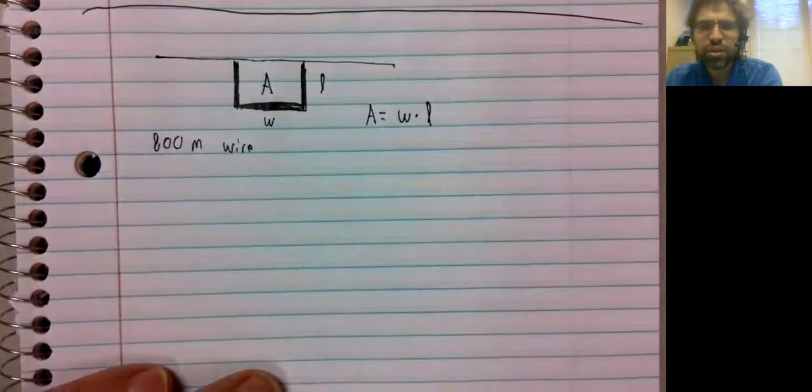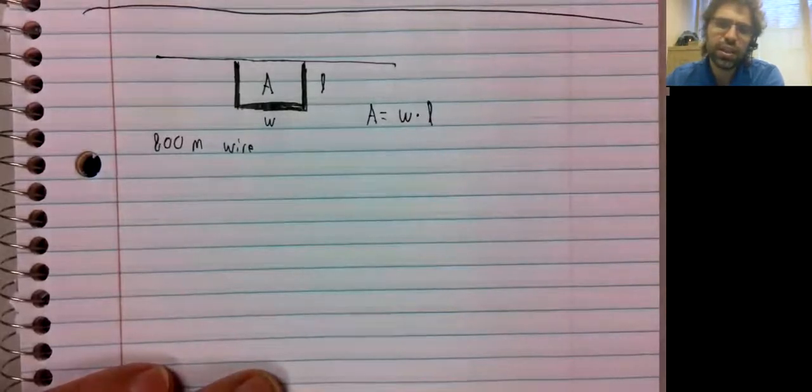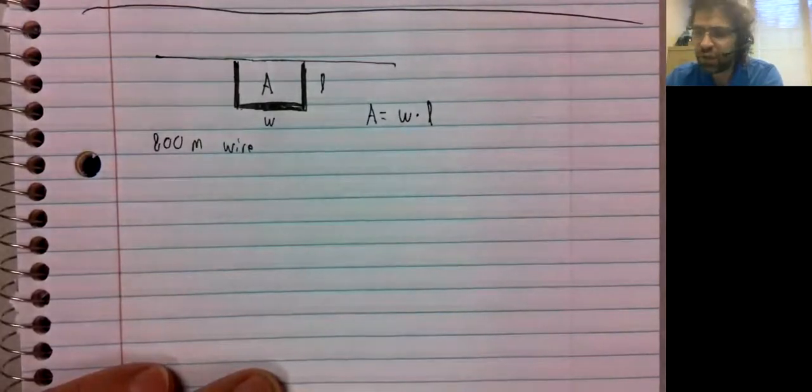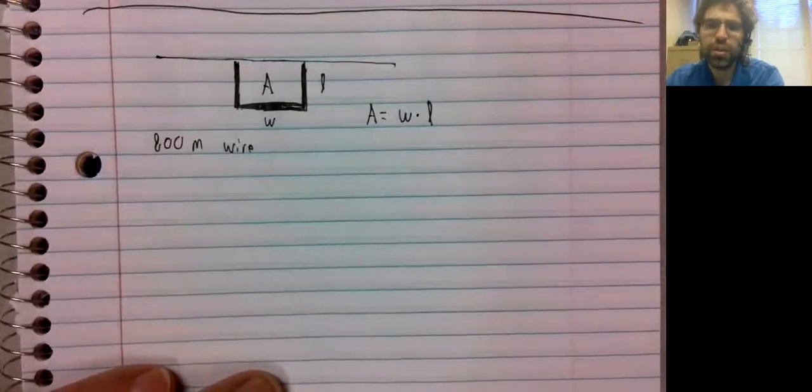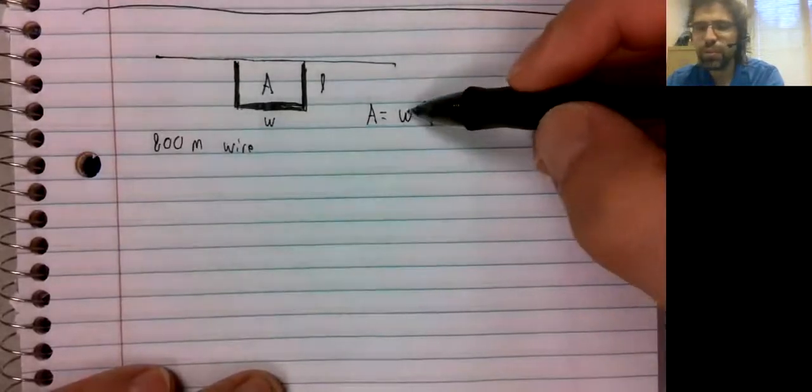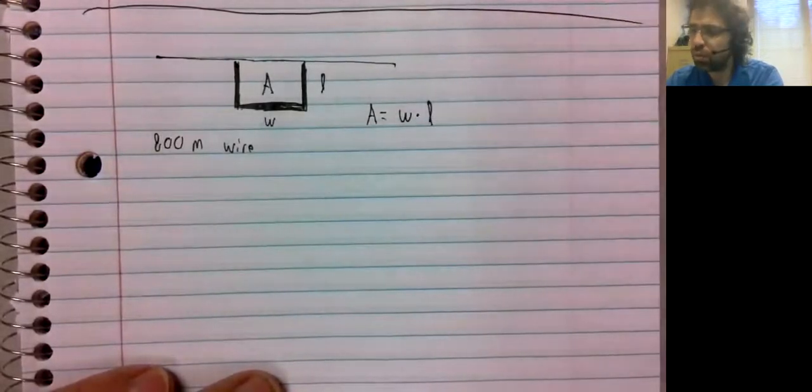But to maximize area, we need to take the derivative of this. And this is one variable calculus. We don't want to take a derivative with multiple variables.